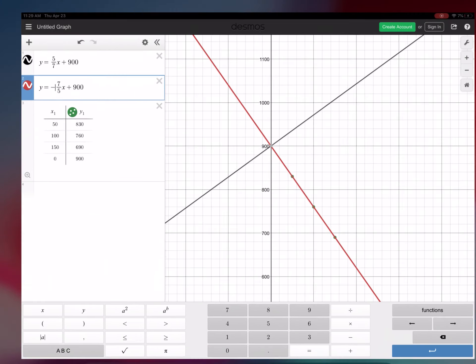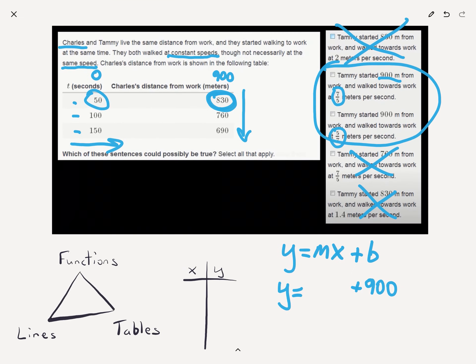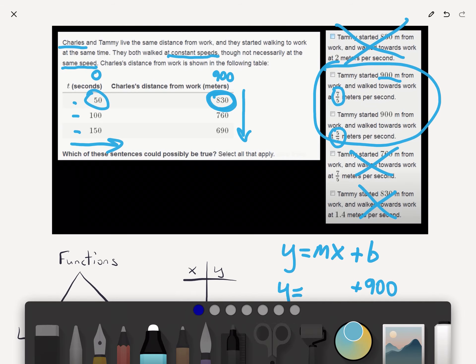So, based on what we did in Desmos, the 7 fifths equation, the 7 fifths function lines up with the dots that describe Charles' walk to work. Therefore, the correct answer, we need a different color, let's go with bright red. The correct answer is right here. Tammy started 900 meters from work and walked towards work at 7 fifths meters per second.